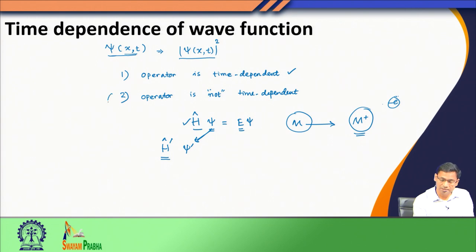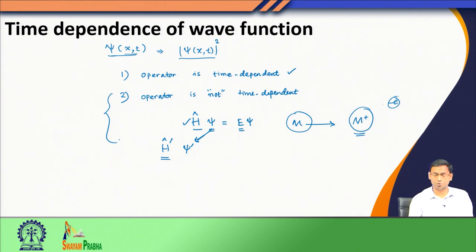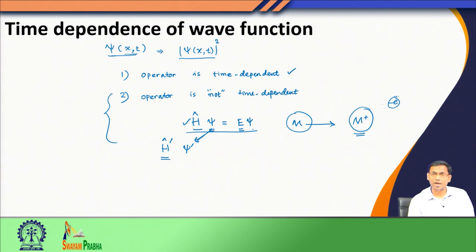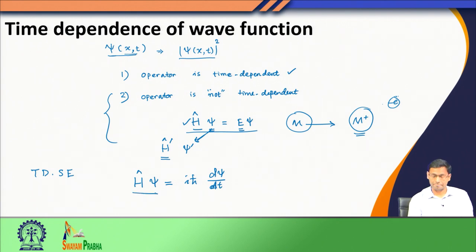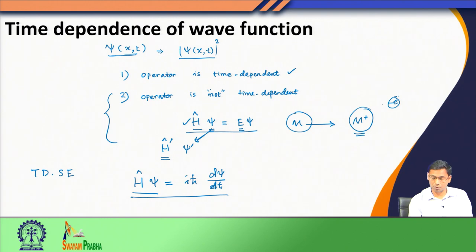Our discussion is mostly on systems where the operator does not have explicit time dependence, and we will see how the properties of the system change in time. To do this, we introduce a new equation. You know the time-independent Schrödinger equation, but we also have a time-dependent version: H·Ψ = iℏ ∂Ψ/∂t. The left-hand side is the operation of the Hamiltonian on the wave function, and the right-hand side is i-h-bar times the partial derivative of psi with respect to t. This is a first-order differential equation with respect to time.